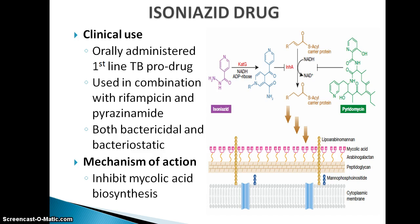Isoniazid is an orally administered first-line TB prodrug. Being a prodrug, it is activated via the CATG pathway to become an active drug, which then inhibits mycolic acid biosynthesis within the cell wall of a mycobacterium. Isoniazid is administered in combination with rifampicin and pyrazinamide, and it has both bactericidal and bacteriostatic effects — bactericidal on fast-growing mycobacterium and bacteriostatic on slow-growing mycobacterium.